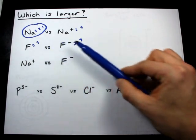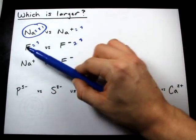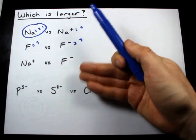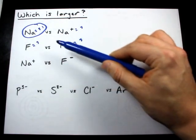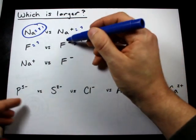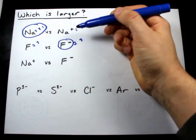In any case, same number of shells, same number of protons because they're the same element. The one that has more electrons will be larger. In this case, that is F minus.